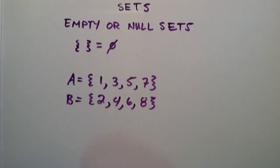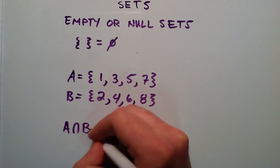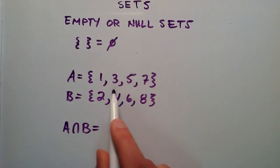So let's say that we were asked to find the intersection of A and B. Now remember the intersection, we're comparing all the elements in A, and we're comparing them with all the elements in B,